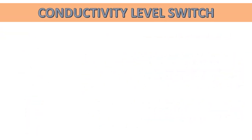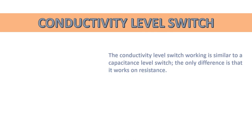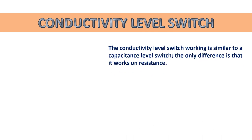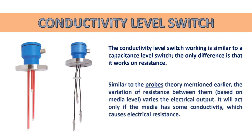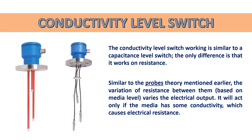The conductivity level switch works similarly to the capacitance level switch. The only difference is that it works on resistance. Based on the probe theory, the variation of resistance between the probes depends on media level. This change in resistance causes a variation in electrical output. It will act only if the media has some conductivity, which causes electrical resistance.